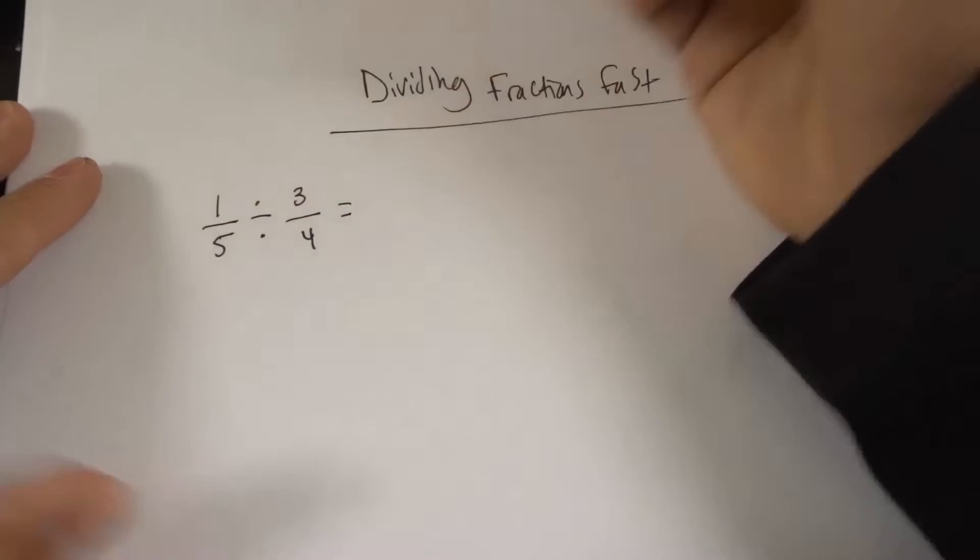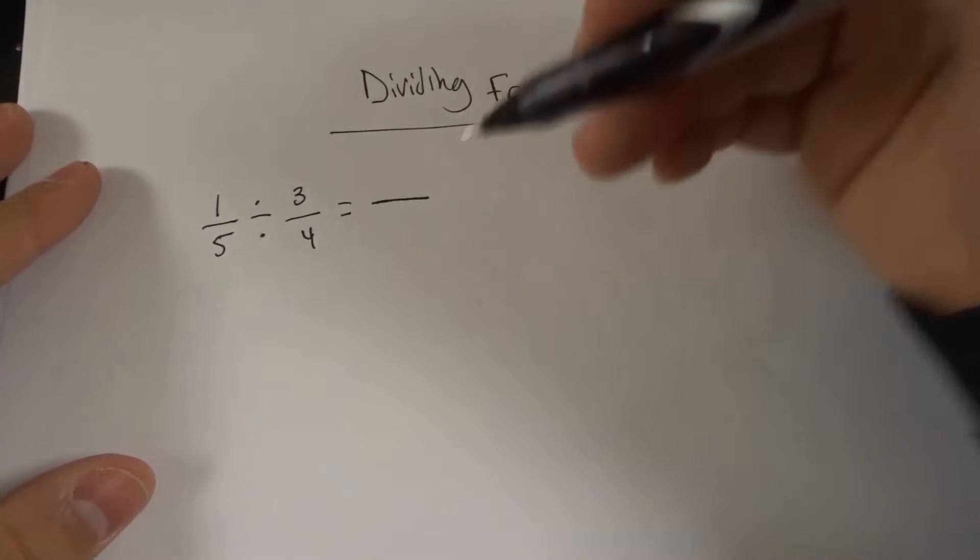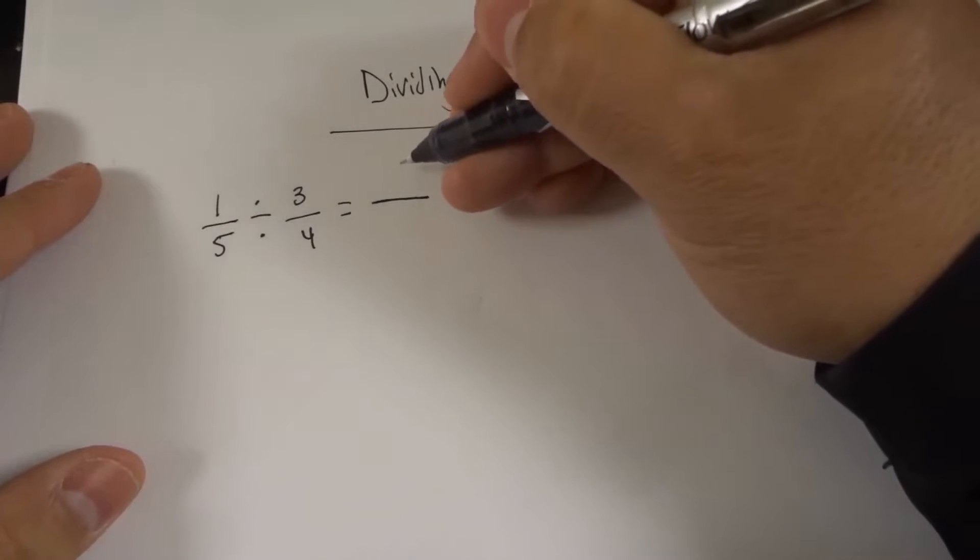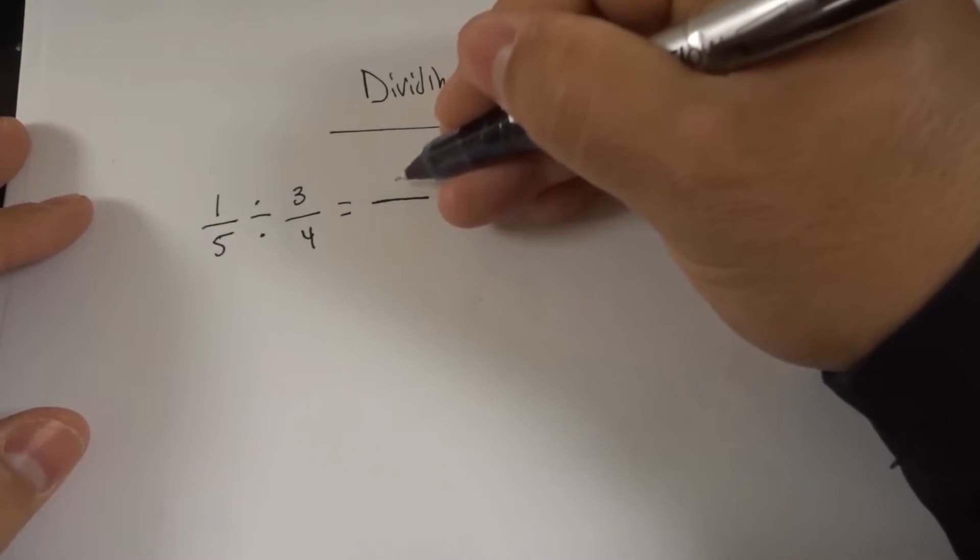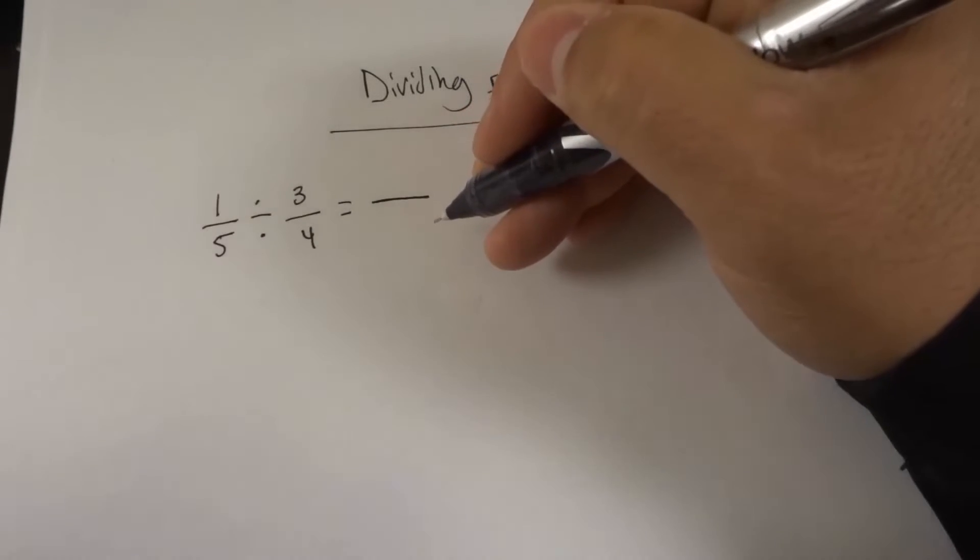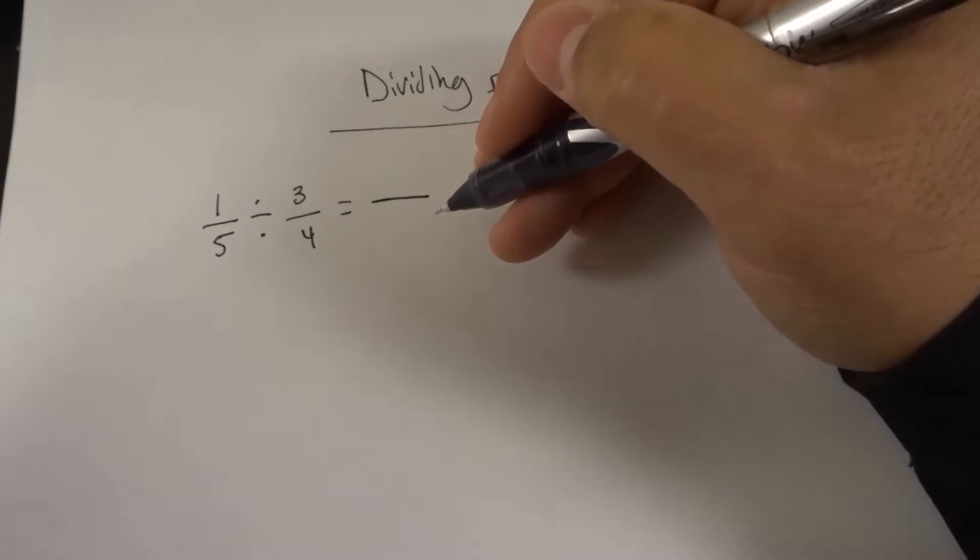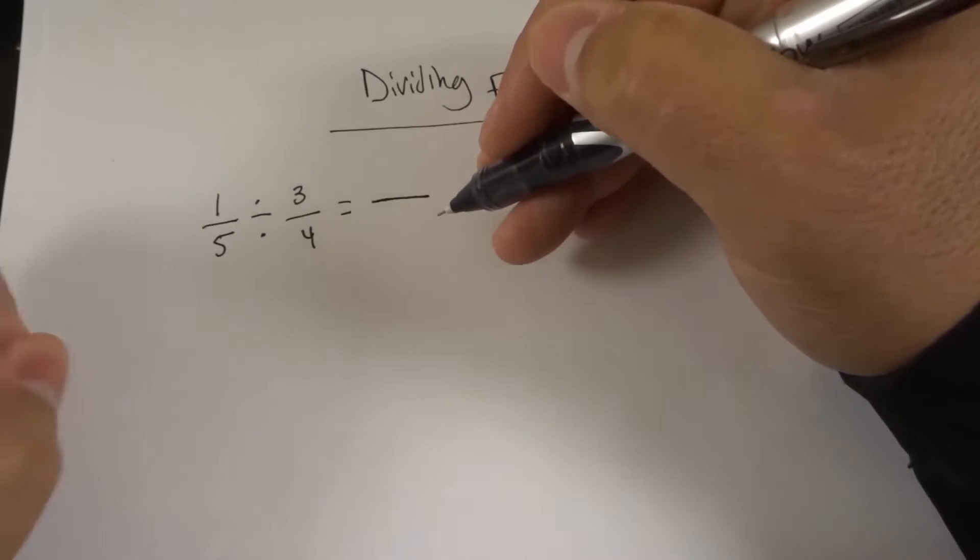Now our answer is actually going to be a fraction. So I'm going to put this little divider line right there. And there's going to be a number that goes on the top of this fraction of an answer and a number that goes on the bottom of this fraction. Now it's actually really easy. All that we need to do is multiply. We're going to multiply numbers together.